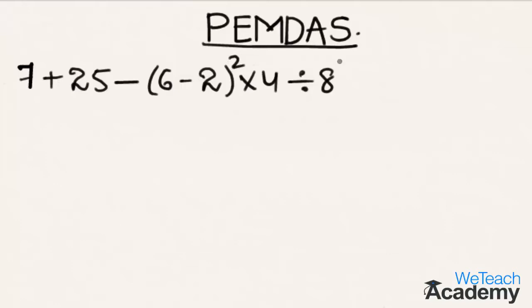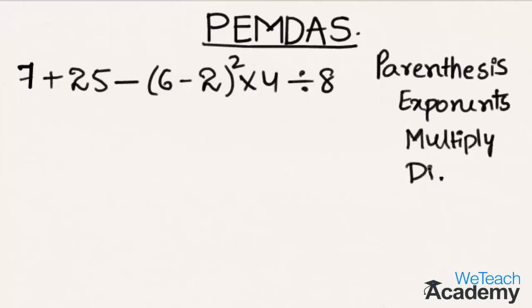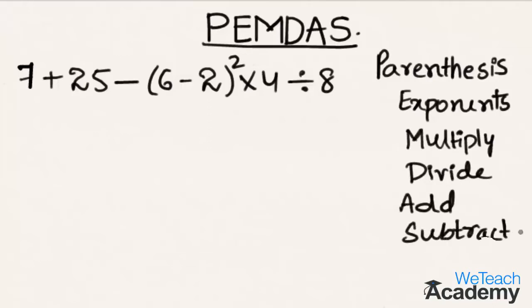Let us expand PEMDAS. P stands for parenthesis, E stands for exponents, M stands for multiply, D stands for division, A for addition, and S stands for subtraction. This is the expanded form of PEMDAS.